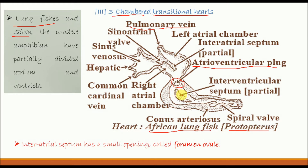This one is the ventricle, and this one is the conus arteriosus. The conus arteriosus contains a spiral valve in its lumen, which is also called the pylangium.